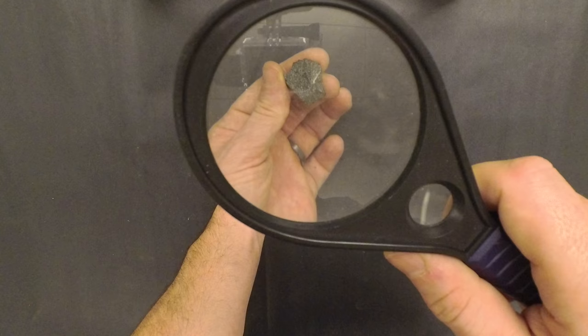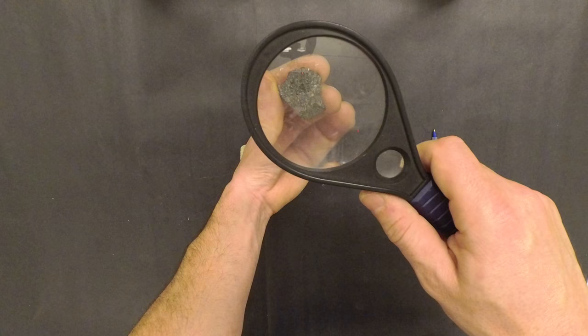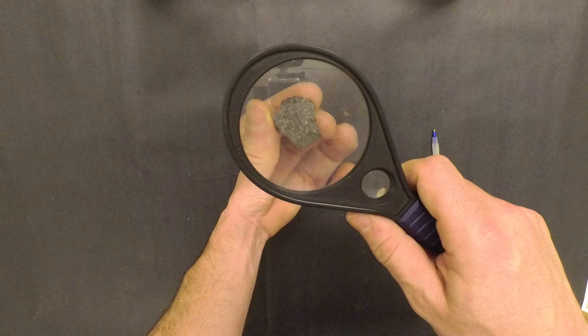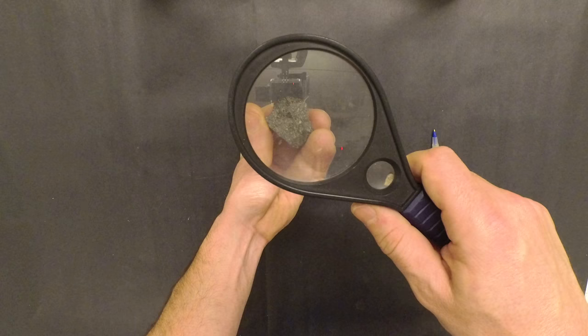If I keep bringing it closer, you'll see it doesn't continue getting bigger and bigger forever. It actually stops working really well. So you'll find there's a sweet spot where it gets maximum magnification. And if I move it out of the way, you can see how much bigger it is there. And this will help you look at those grains that make this up.